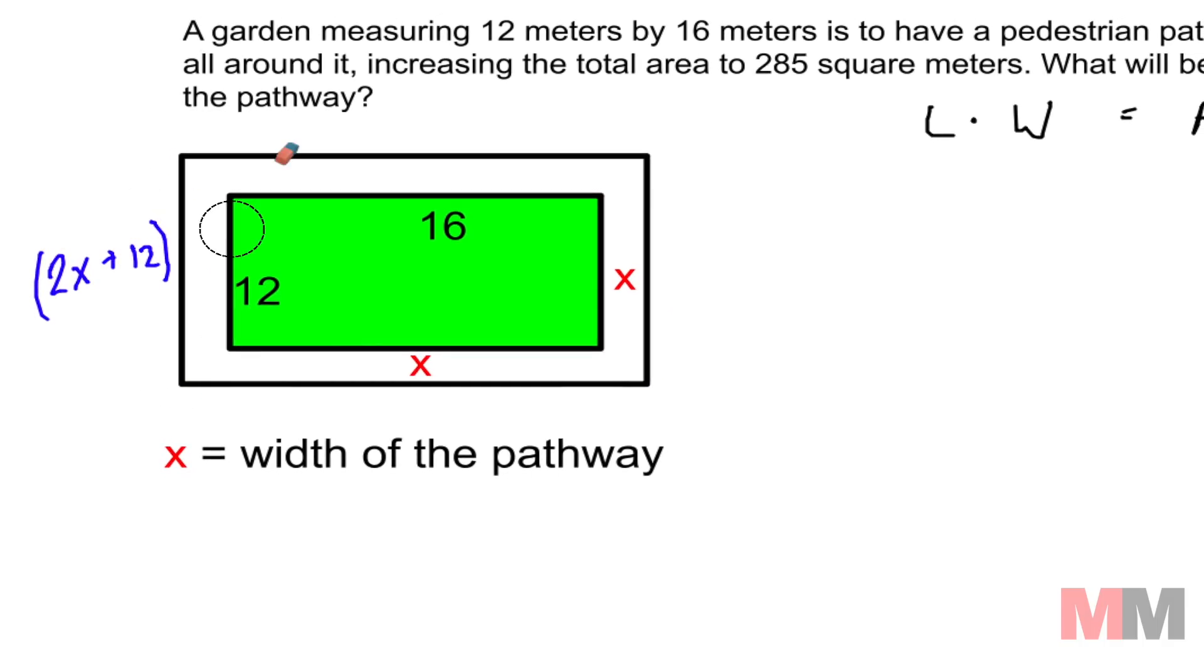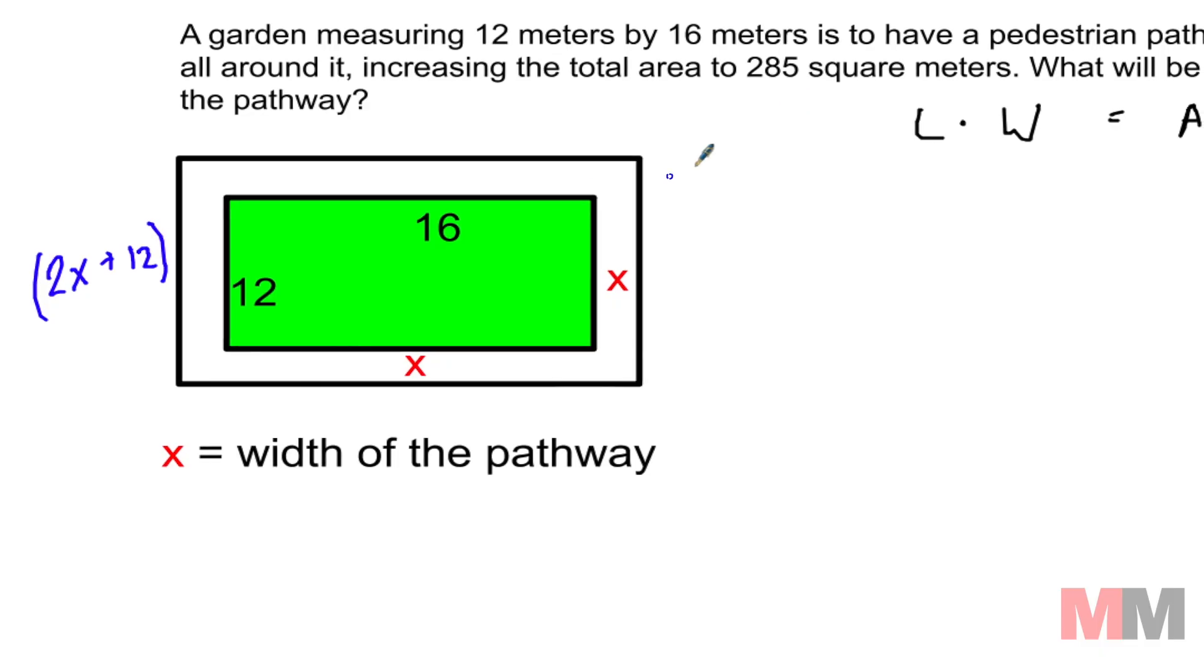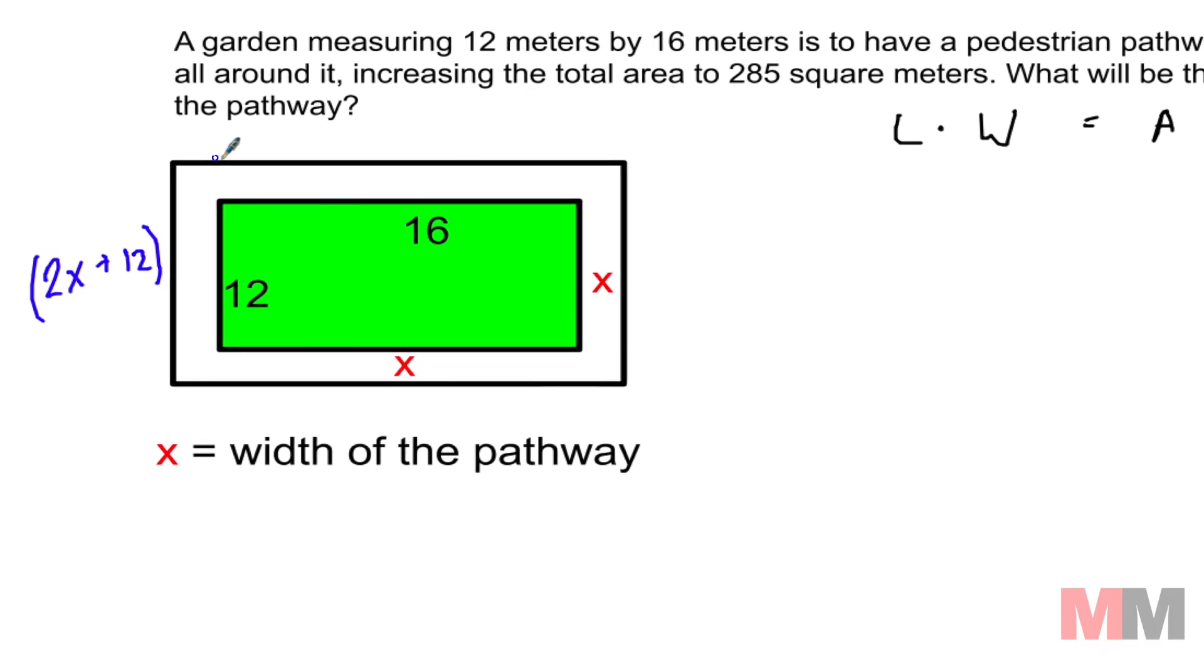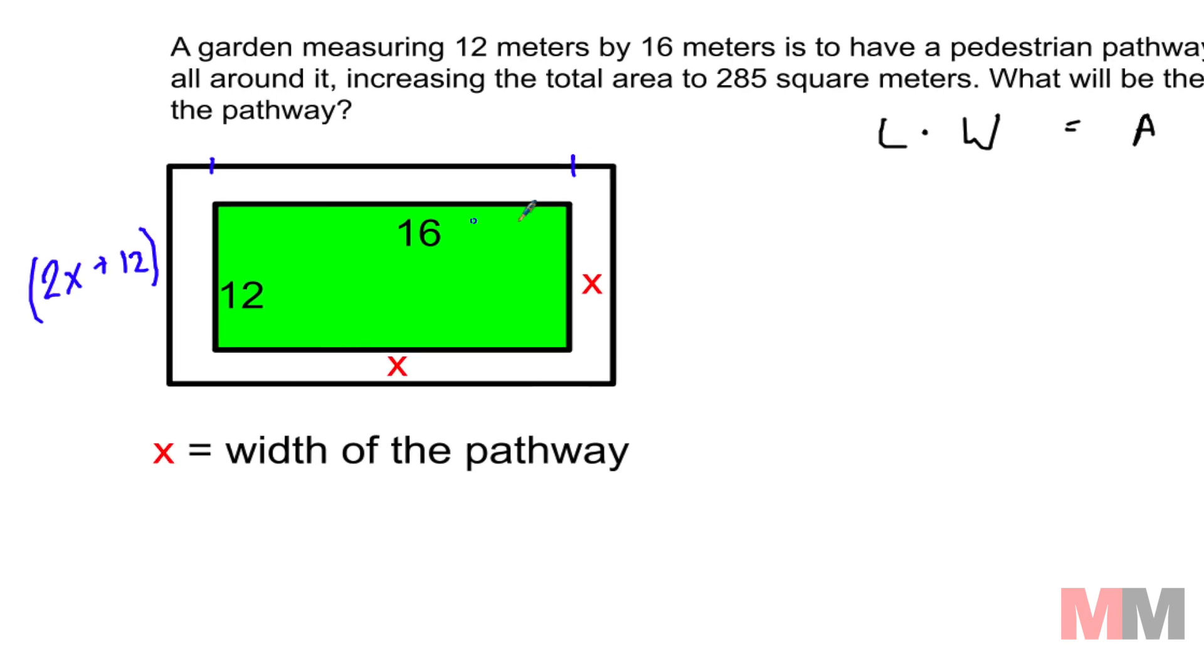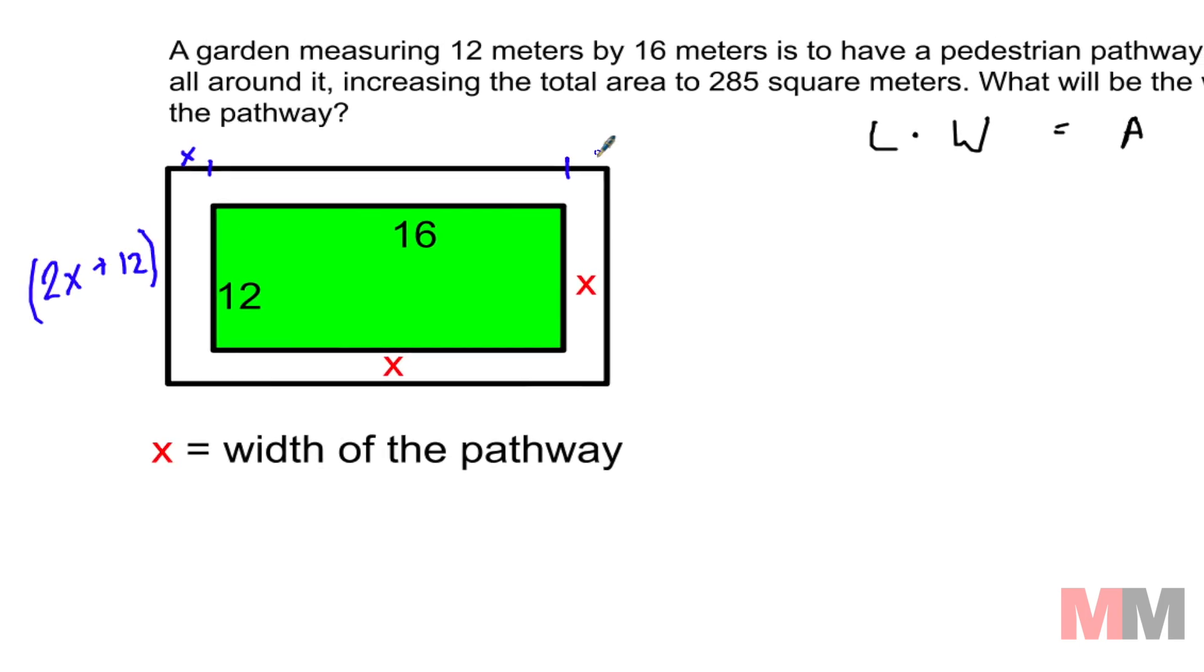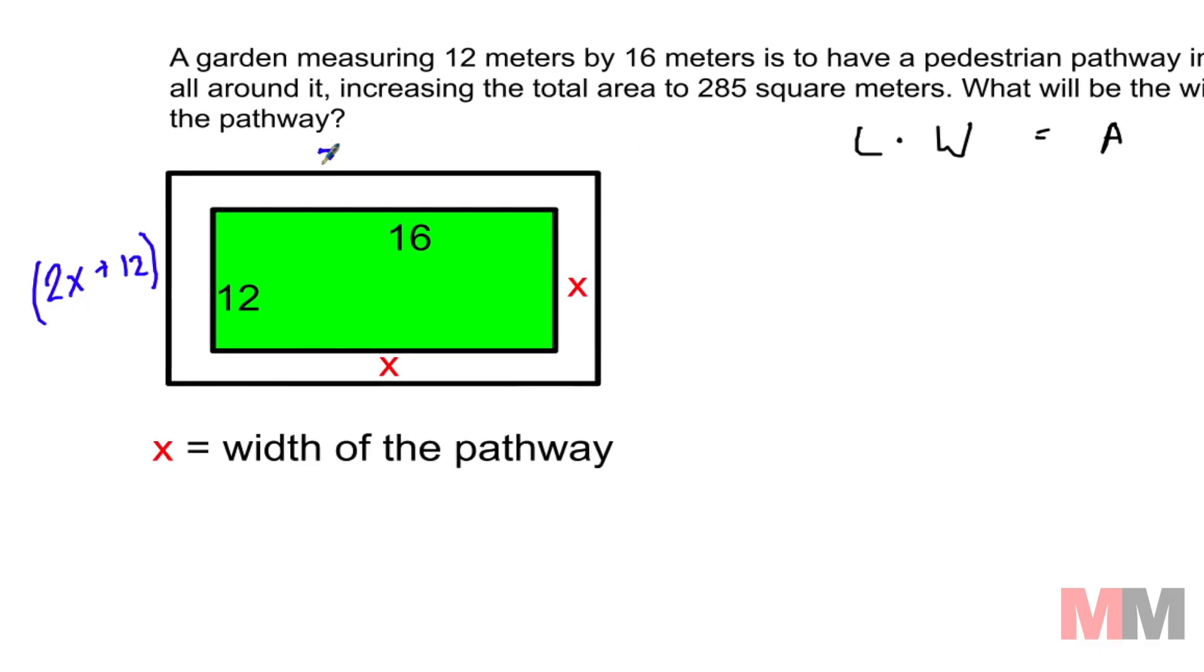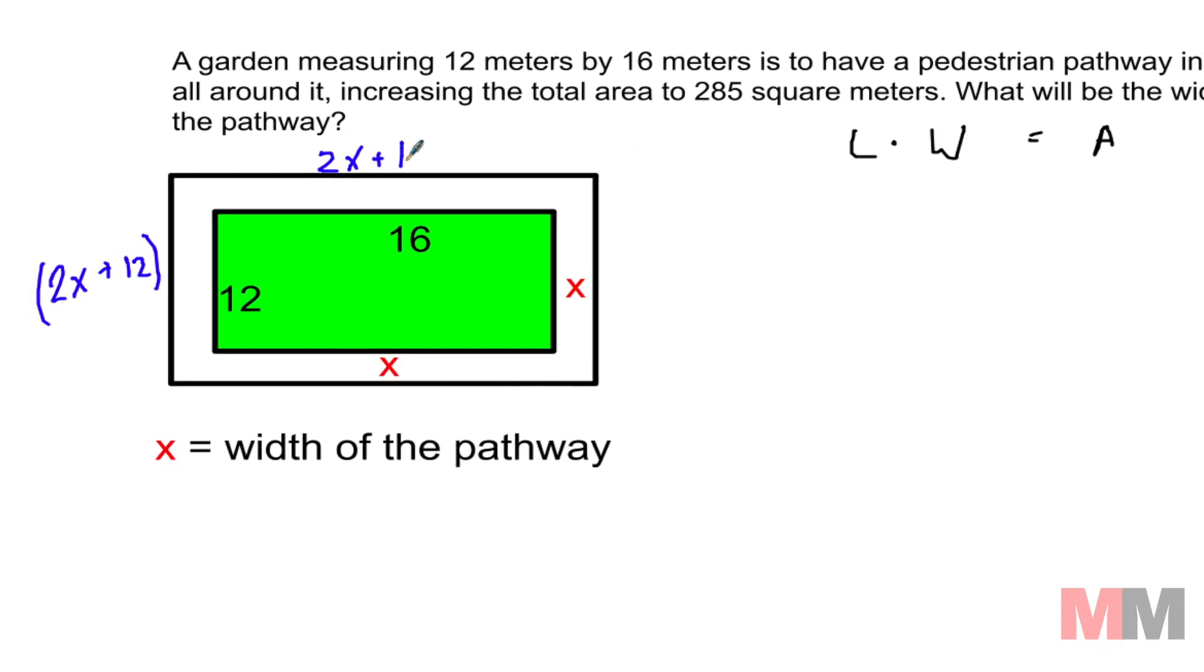The same logic can be done to find the width. So this is 16 and as you can see, two pieces with the 16, two pieces of x with this 16 makes up the total width. 2x plus 16.